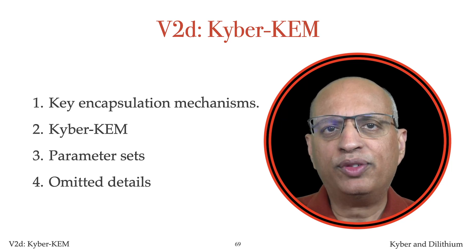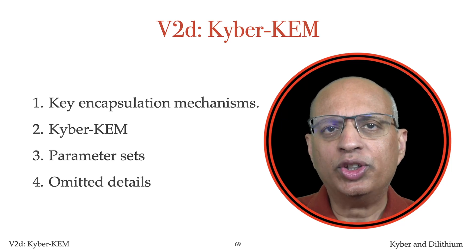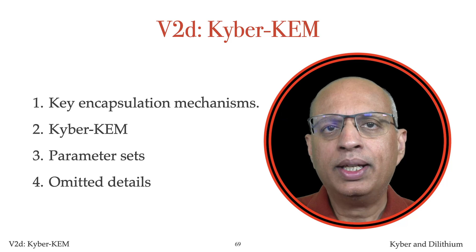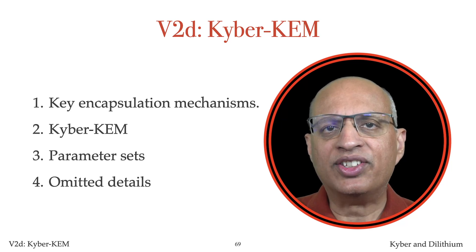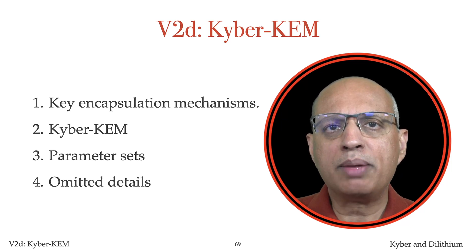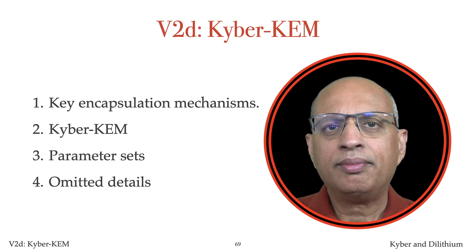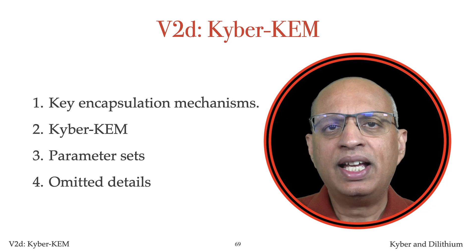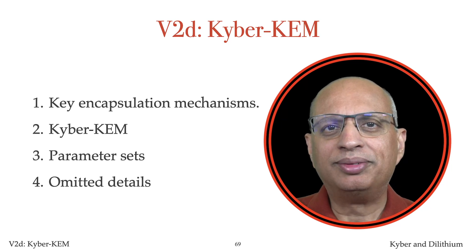I'll show how the Fujisaki-Okamoto transform was used to convert the Kyber public key encryption scheme into the Kyber KEM, which is secure against chosen ciphertext attacks. I'll also describe the Kyber KEM parameter sets in FIPS 203, and summarize the Kyber details omitted in this chapter.